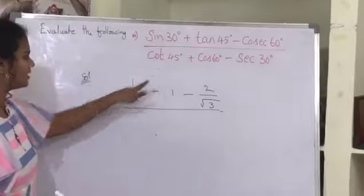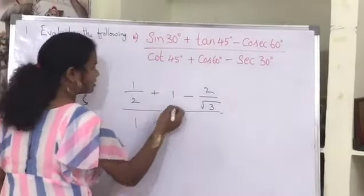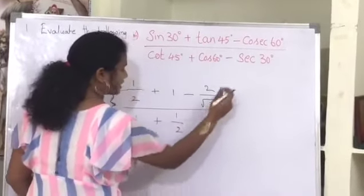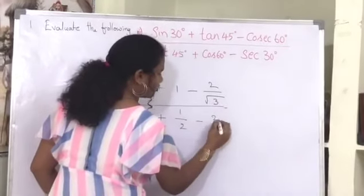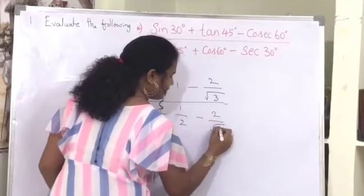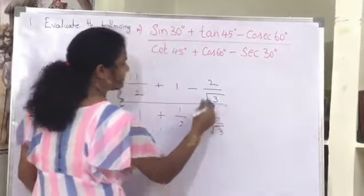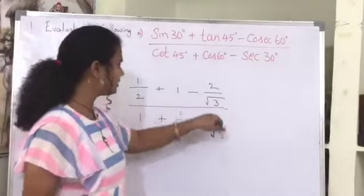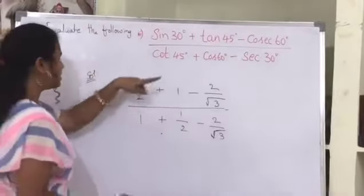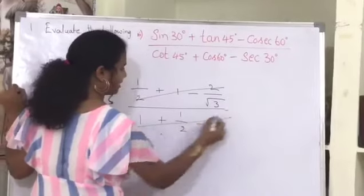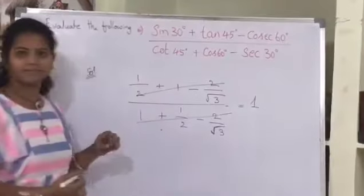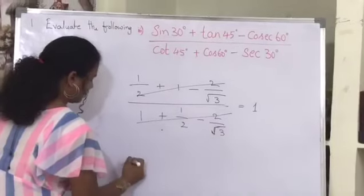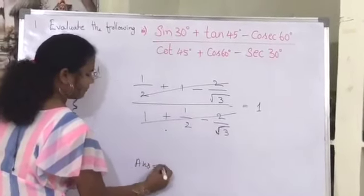In the denominator: tan 45 degree equals 1, plus cos 60 degree equals 1 by 2, minus secant 30 degree equals 2 by root 3. Observing both numerator and denominator, we can see 1 by 2 plus 1 by 2 equals 1, and the terms with 2 by root 3 cancel each other. Therefore the answer is 1.